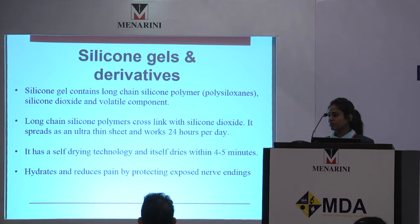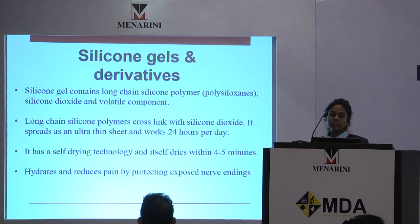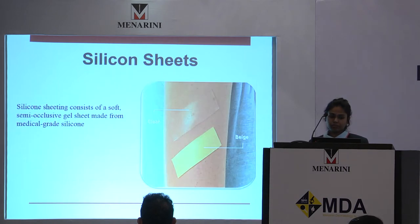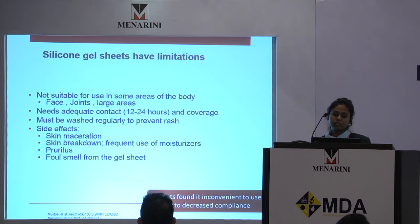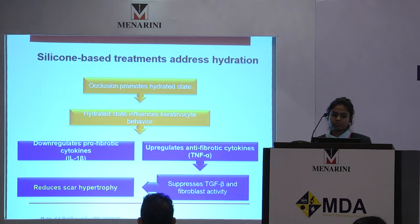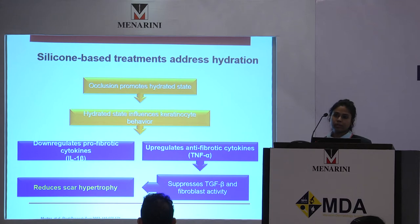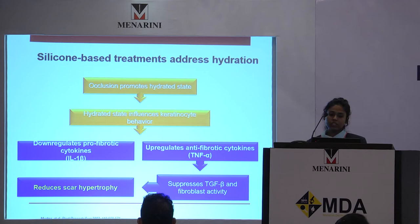Silicone gel contains long-chain silicone polymers, forms a thin layer on the scars, and works for longer hours. It has self-drying technology; it hydrates and reduces pain by protecting the exposed nerve endings. Silicone sheets consist of a soft semi-occlusive gel sheet and may not be suitable or convenient for patients, as they cannot be used on exposed areas like the face, joints, and larger areas, and have to be washed frequently. There can be skin maceration, pruritus, and foul smell. Silicone occlusion hydrates the skin, influencing corneocyte behavior, down-regulating pro-fibrotic cytokines like interleukin-1-beta, and up-regulating anti-fibrotic cytokines like tumor necrosis factor alpha, thus reducing scar hypertrophy.